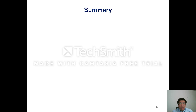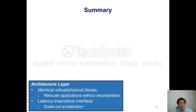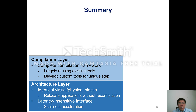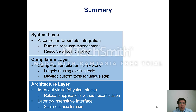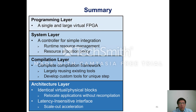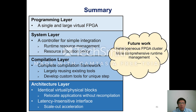To summarize, the VITAL framework's architecture layer provides identical virtual and physical blocks, which is key to enabling efficient FPGA sharing by allowing runtime relocation without recompilation. The latency-insensitive interface is key to supporting scale-out acceleration. A compilation framework maps applications onto the proposed abstraction, and a system controller handles runtime resource management. Together, these components create the illusion of a single large virtual FPGA for users. FPGA virtualization is much more challenging than virtualizing traditional computing devices, and VITAL is our initial effort, with plans to extend it to a more comprehensive system in future work.